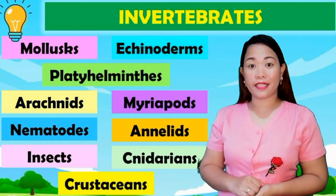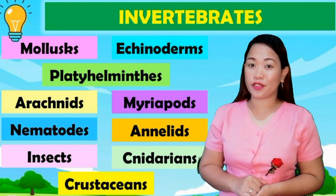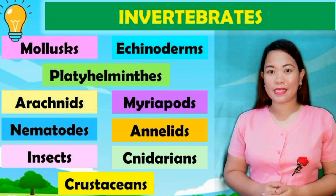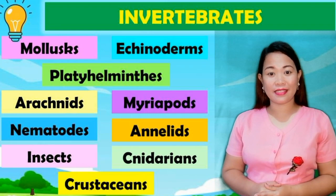Invertebrates are divided into ten subgroups, which include mollusks, echinoderms, platyhelminths, arachnids, nematodes, annelids, insects, cnidarians, and crustaceans.